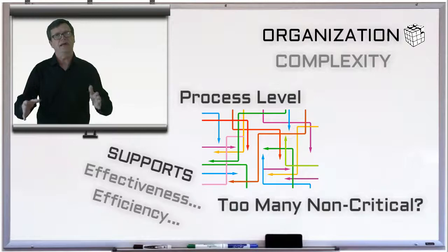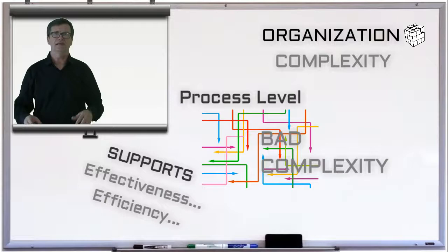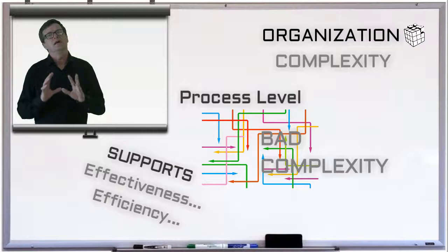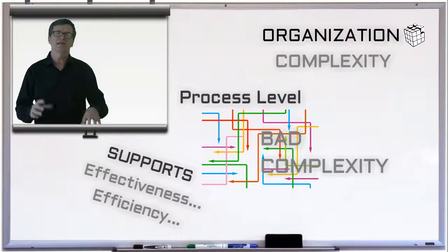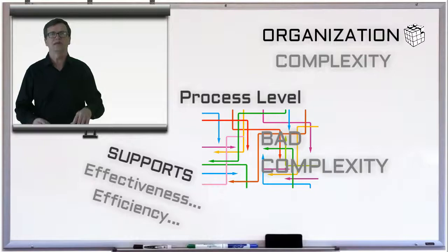Another example is when at the process level the organization is weak or lacking, or it's in the wrong places. You don't have the right processes in the right places and the organizational capability is not fit for purpose.